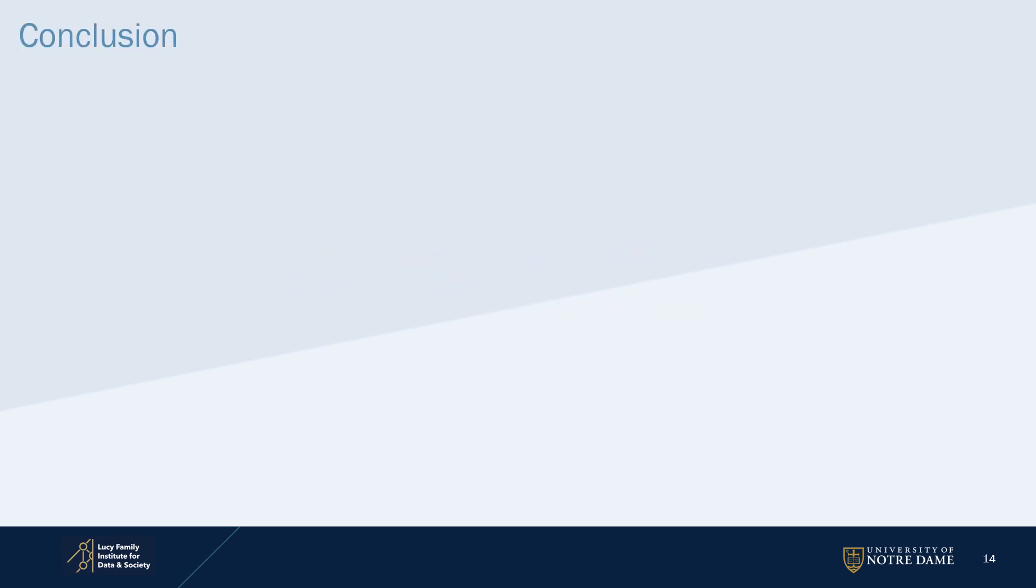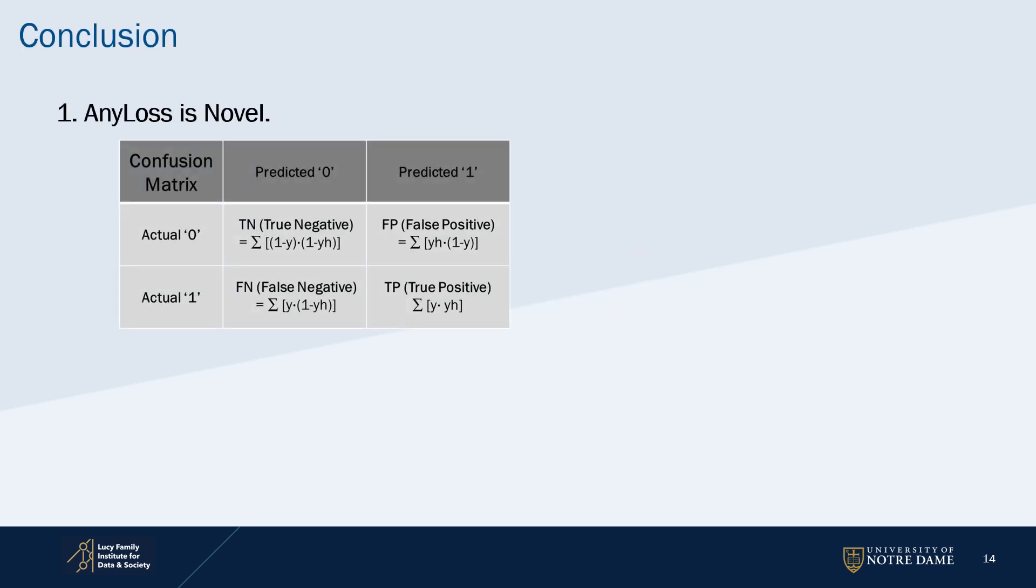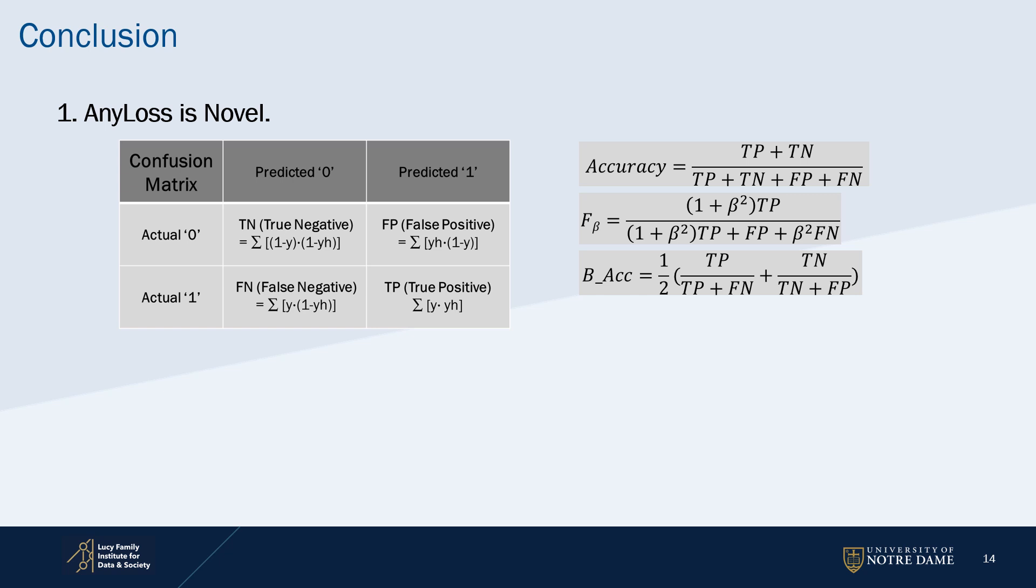Conclusion. AnyLoss is novel. It can directly target any confusion-matrix-based evaluation metric in a neural network.